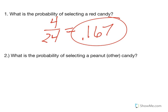Number two. What about the probability of selecting a peanut candy? So when you look at this, we've got 10 peanut candies out of the total of 24, and when you change that to a decimal, you would get 0.417.